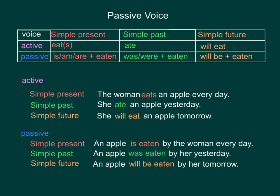The active voice of simple present tense, for example: the woman eats an apple every day. The active voice of simple past tense is: she ate an apple yesterday. The active voice of the simple future tense is: she will eat an apple tomorrow.